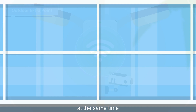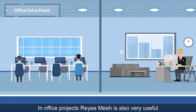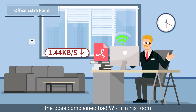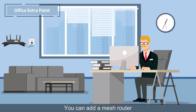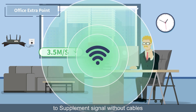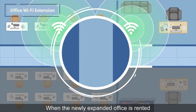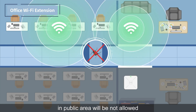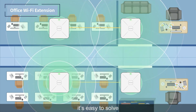In office projects, Ray-E Mesh is also very useful. For example, if the boss complains about bad Wi-Fi in his room, you can add a mesh router to supplement the signal without cables. When a newly expanded office is rented, damaging the walls or wiring in public areas will not be allowed — but with the Ray-E Mesh solution, it is easy to solve.